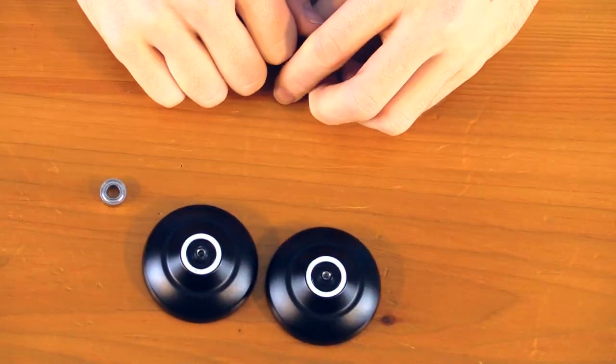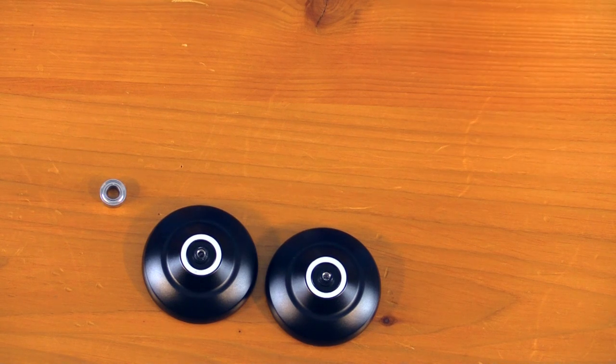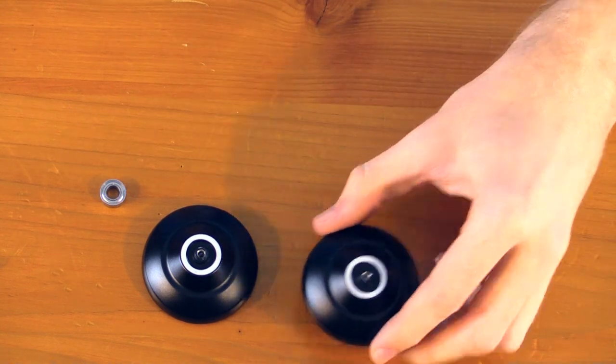And now once the bearing is out, you can either lube it, or you can upgrade it to a center track bearing, which you can also find on yoyotricks.com.